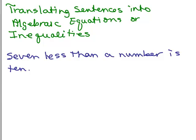We're going to translate sentences into algebraic equations or inequalities. So we'll start with this one. Seven less than a number is ten. Now what makes this a sentence is it has this verb 'is' and usually that's what separates an expression from an equation.